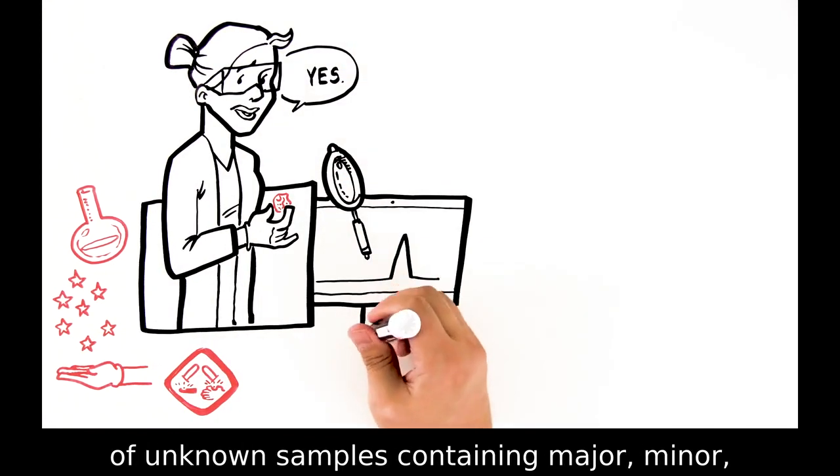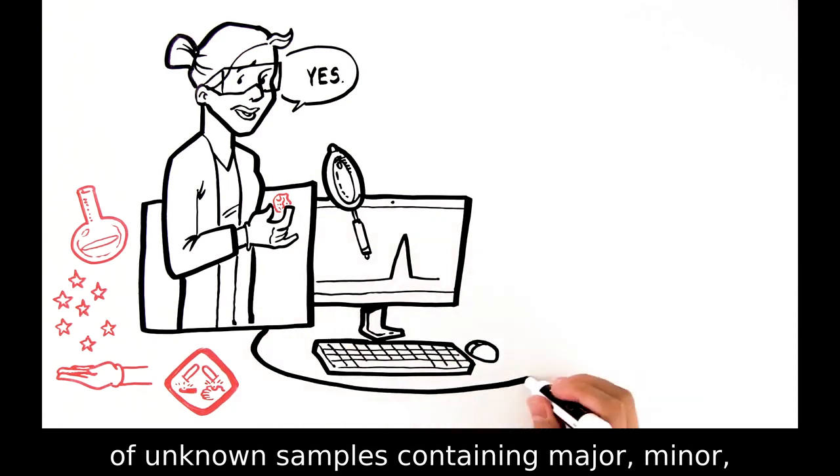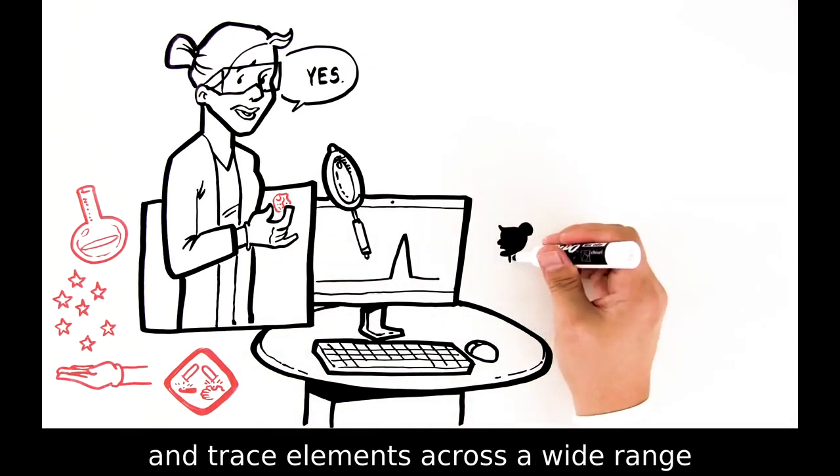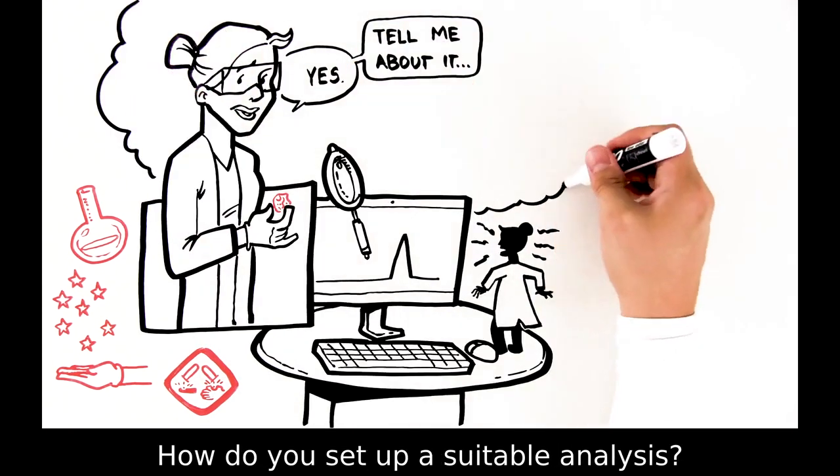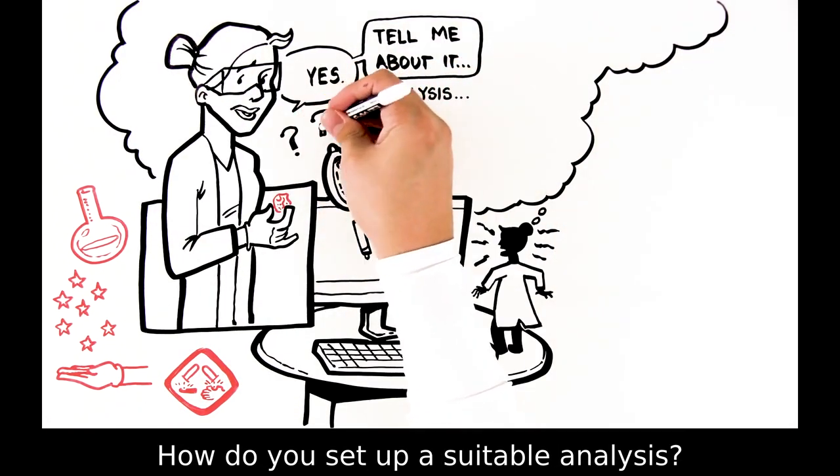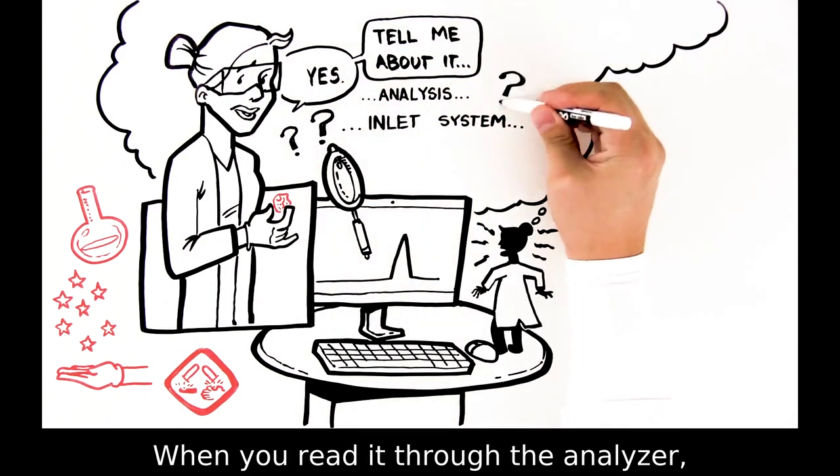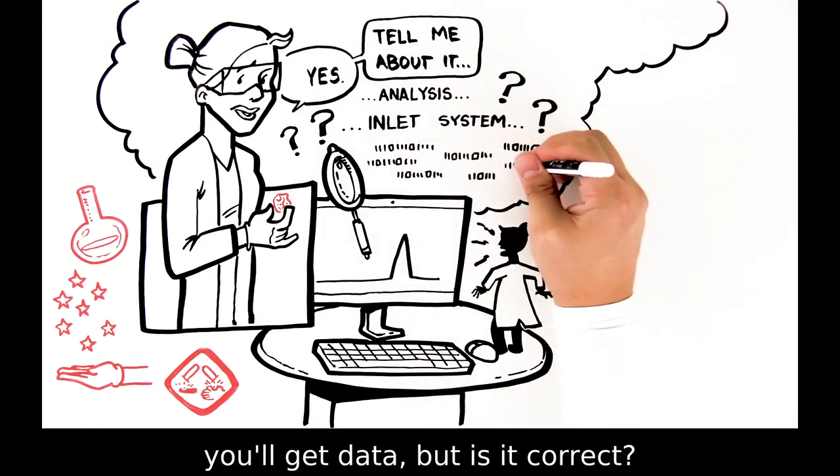Performing multi-element determination of unknown samples containing major, minor, and trace elements across a wide range of sample types can be a pretty stressful proposition. How do you set up a suitable analysis? What inlet system do you need? When you run it through the analyzer, you'll get data, but is it correct? Are there any interferences in your spectra?